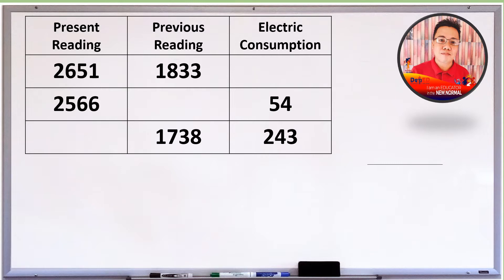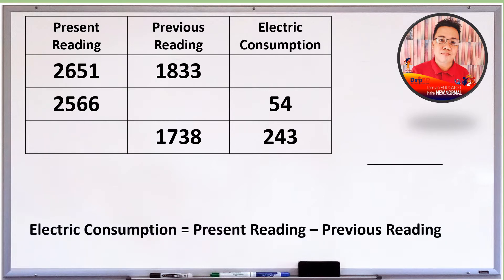So focus muna tayo sa pinakataas na row. Makikita natin na unknown o nawawala ang electric consumption. Ang formula sa pagkuha ng electric consumption ay present reading minus previous reading. Ang ating present reading ay 2,651 kWh.